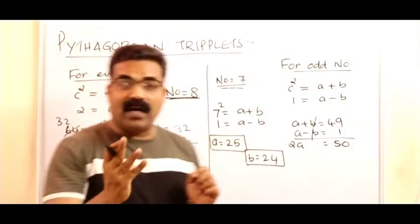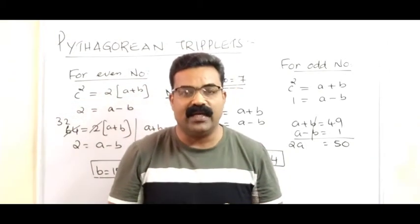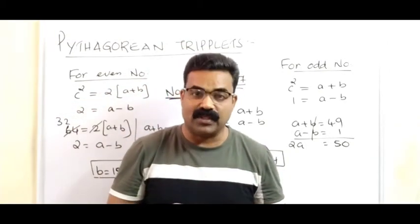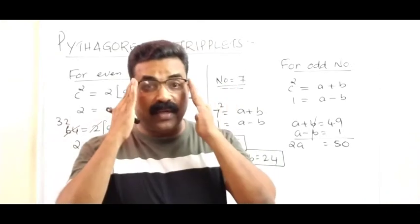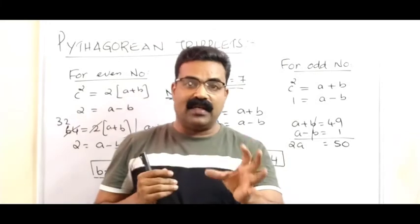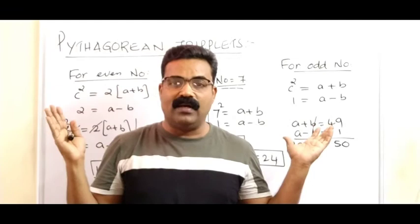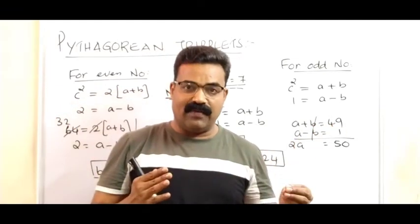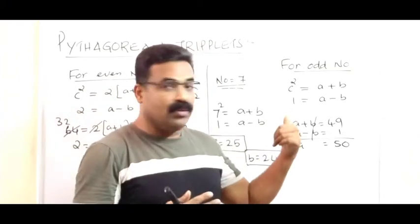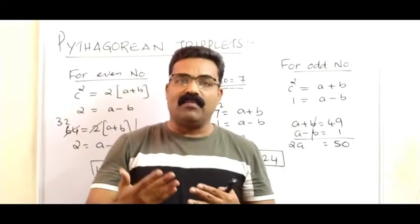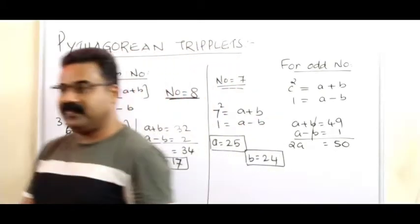So if the given number is 8, then 8, 15, 17 is a group of three numbers that satisfies Pythagoras theorem — that is why they are known as a Pythagorean triplet. We've seen how to find Pythagorean triplets whether the given number is odd or even. Use the appropriate formula accordingly. Take more numbers and practice!